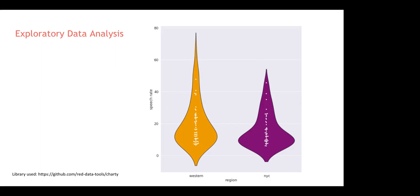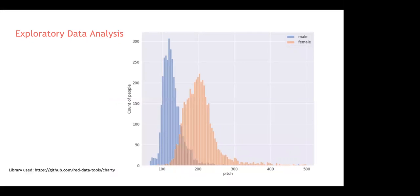The graph shows different regions on the x-axis and speech rate on the y-axis. We can see that females from the Western region have a higher speech rate compared to males from NYC — so there's variation by both gender and region. The next histogram shows pitch distribution by count of people. Females generally have lower pitch and males tend to have higher pitch. This was also plotted using the Charty library.